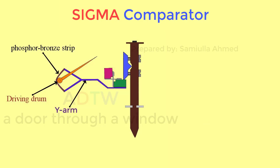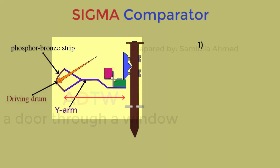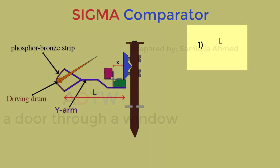The magnification of the instrument is obtained in two stages. In first stage, if the effective length of the Y arm is L and the distance from the hinge pivot to the knife edge is X, then the magnification is L by X.